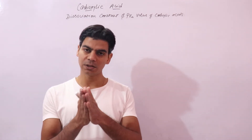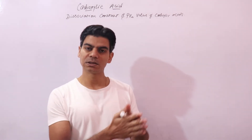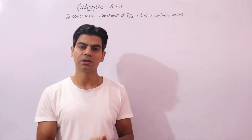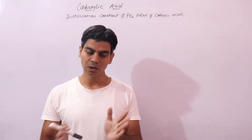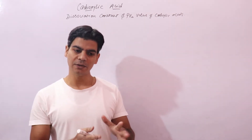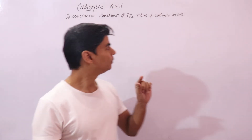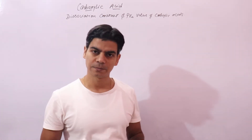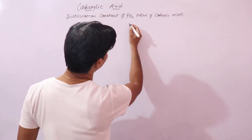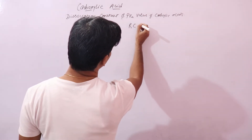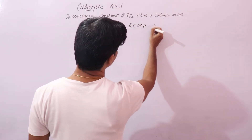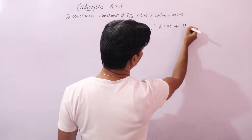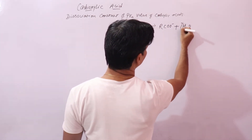First, we will derive a relation that relates equilibrium constant or ionization constant in terms of hydrogen ion concentration. Once we get that, we will derive a relation between pKa and the ionization constant. This is your carboxylic acid — when it ionizes it gives you carboxylate ion and your hydronium ion.